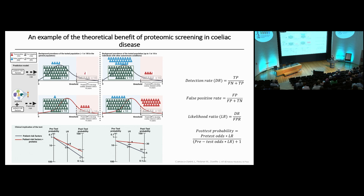It's important to consider how we want to implement this and the target population to screen. One scenario is screening everyone with proteomic tests — for celiac disease, around one person in 100 will develop it. The second scenario is applying these novel tests to a population with already increased absolute risk, such as people with autoimmune conditions, where about one in 18 will be diagnosed with celiac disease, immediately translating into a greater benefit of applying these tests.